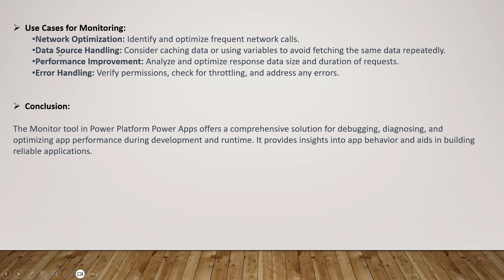This monitoring tool covers network optimization — for example, if there are too many frequent calls — and data source handling, such as caching data using variables to avoid fetching the same data repeatedly. When you perform any action in your PowerApps, it records all actions in sequence so you can see what data is being fetched, whether each call is a success or failure, along with the HTTP code for each network call.